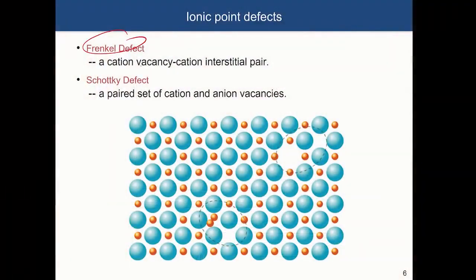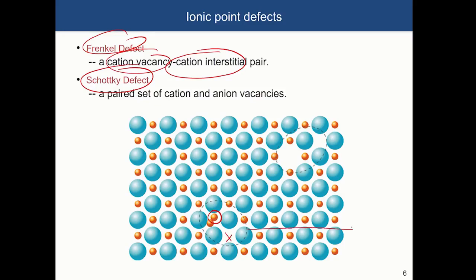These are called the Frenkel defect and the Schottky defect. A Frenkel defect is a cation vacancy paired with a cation interstitial: you remove one cation but form an interstitial to compensate the charge. Looking at this image, there is a missing cation that is compensated by an interstitial — that vacancy plus interstitial combination is called a Frenkel defect.